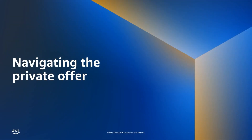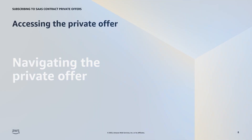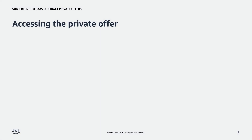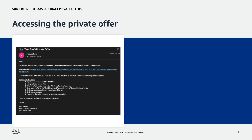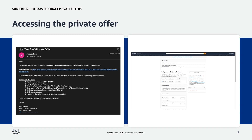Now we'll walk through the process of navigating to a SaaS Contract Private Offer. There are two ways to access the SaaS Contract Private Offer. First, the buyer needs to sign into the AWS account they want to use to subscribe to the private offer. The first option is to open the private offer URL that was sent by the seller. The second option is for the buyer to navigate to the AWS Marketplace homepage, search for the product they want to purchase, choose Continue to Subscribe, then select the private offer from the drop-down menu titled Offer Selection.